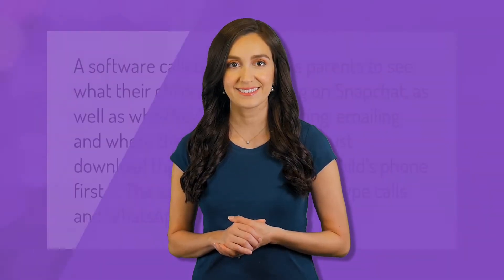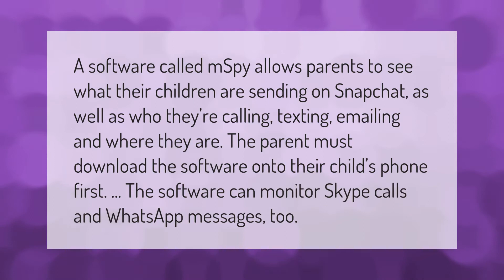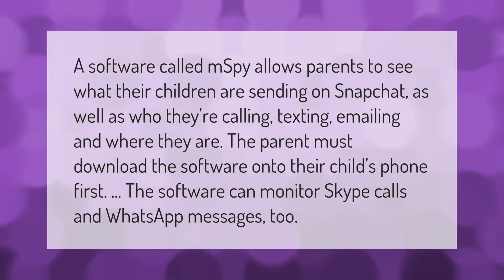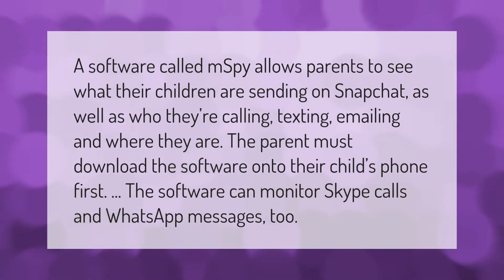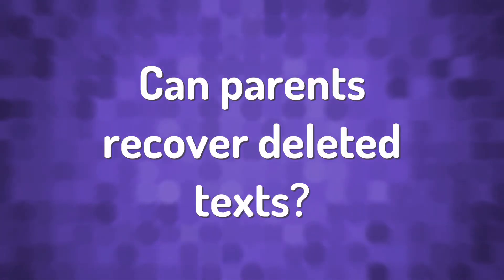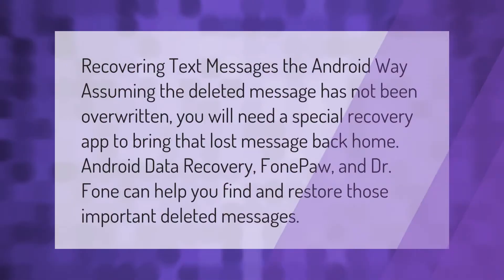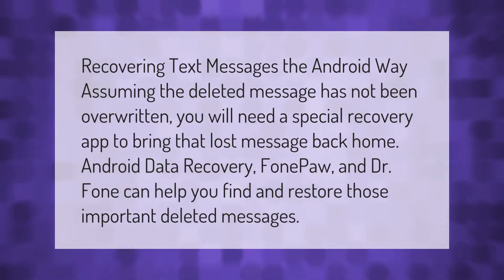A software called mSpy allows parents to see what their children are sending on Snapchat, as well as who they're calling, texting, emailing, and where they are. The parent must download the software onto their child's phone first. The software can also monitor Skype calls and WhatsApp messages.